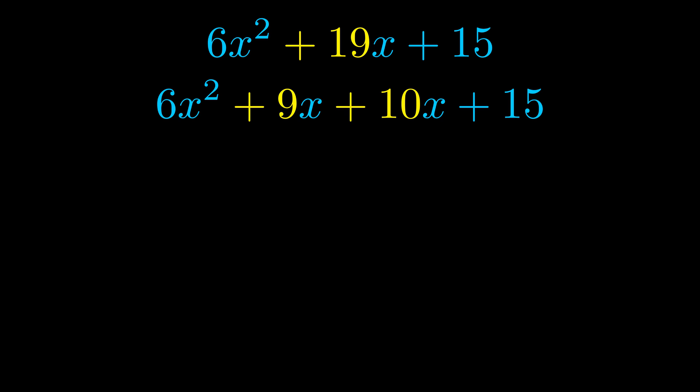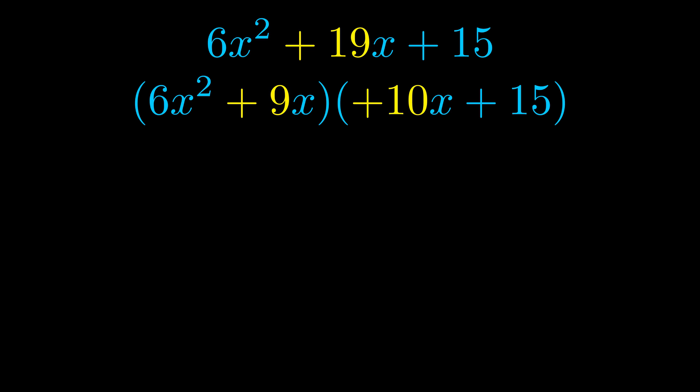Once we've done this we go ahead and we put parentheses around the first term and the last term and we do that so that we can take the greatest common factor out of both terms. We can see the greatest common factor is now outside in green. Notice also how what remains inside of the parentheses is the same in both cases.